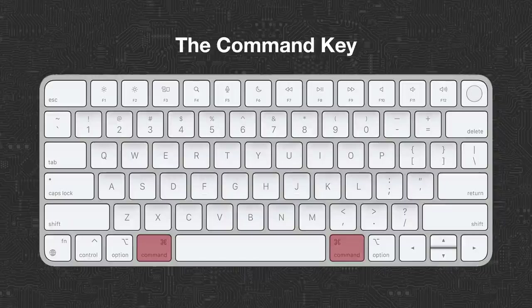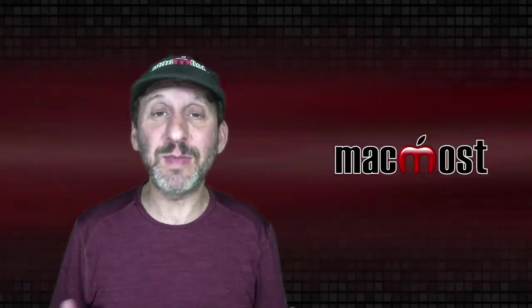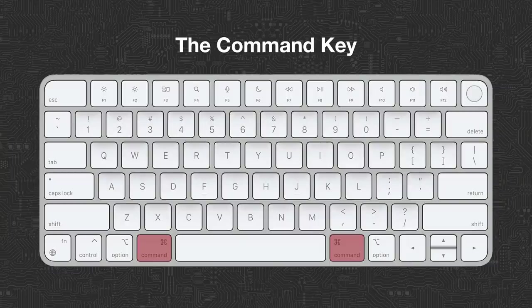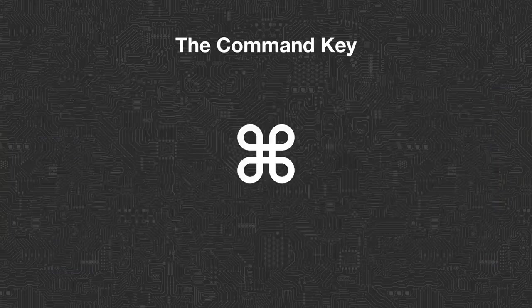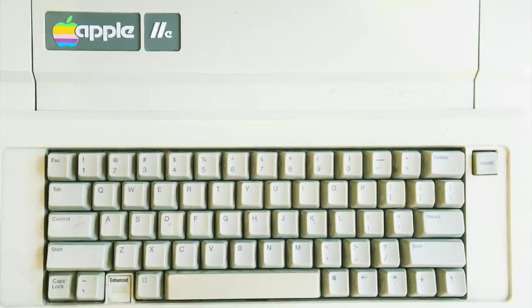First let's start with the Command key. The Command key is something we use all the time — it's the main modifier key for keyboard shortcuts: Command C, Command Q, and so forth. But the symbol on it is kind of weird. It looks like this. What's this symbol and how did it end up on the Command key?